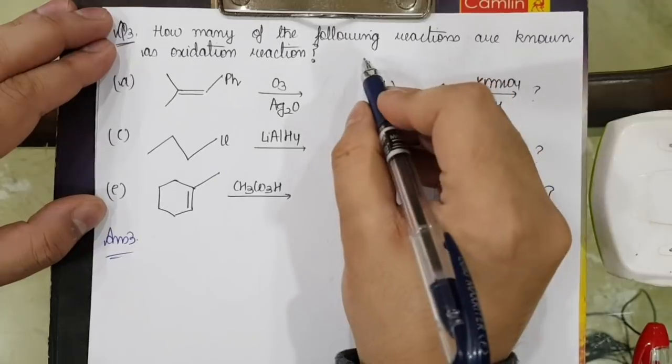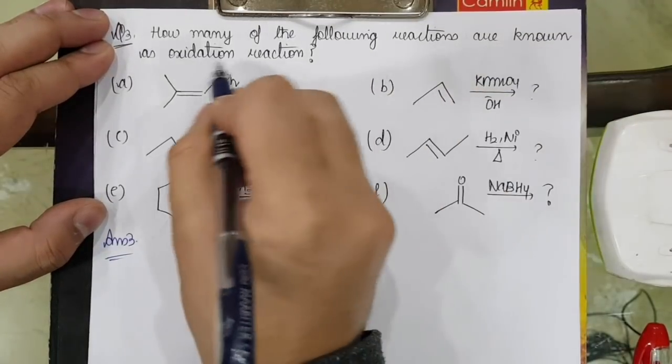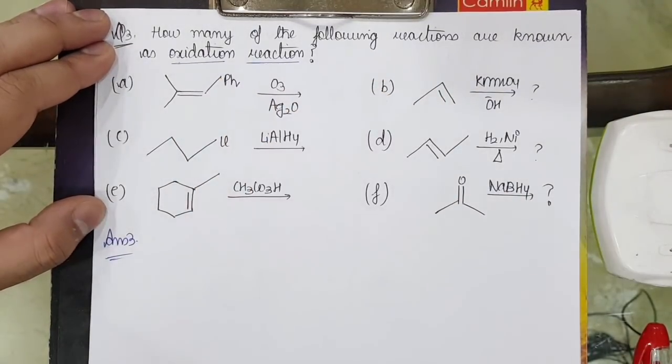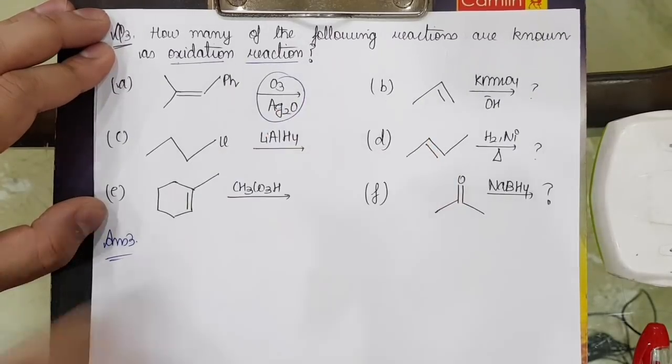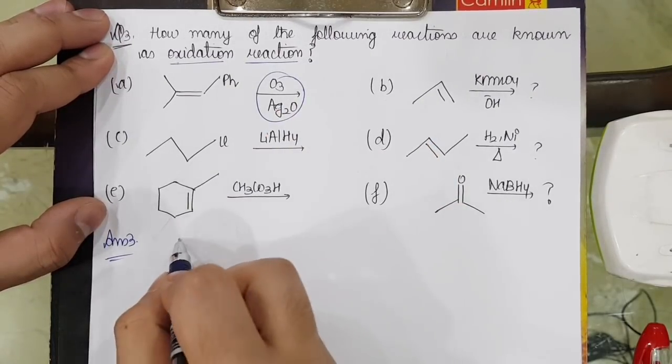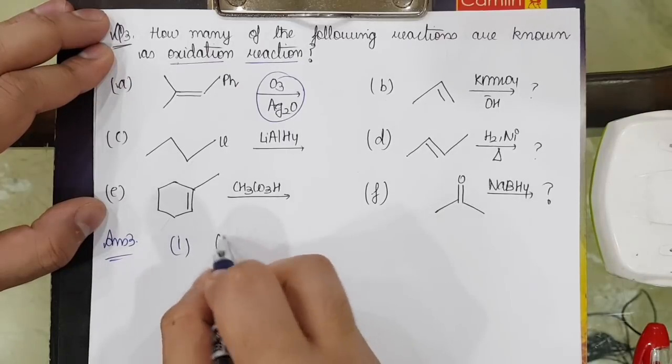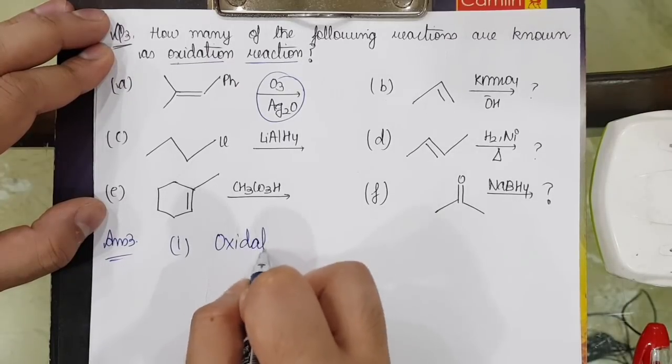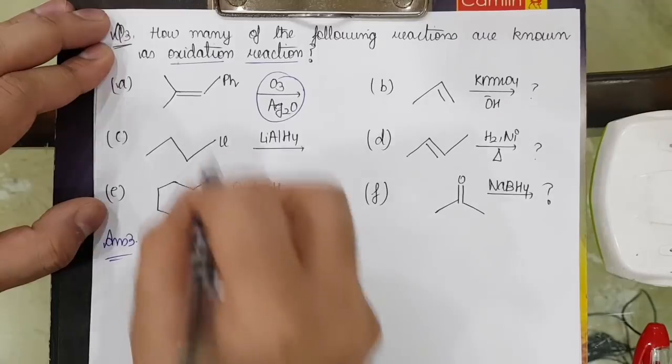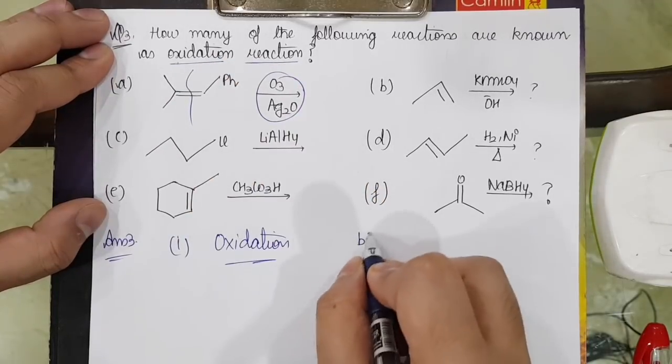The next question is: How many of the following reactions are known as oxidation reactions? Basically, in which reactions is oxidation occurring? Ozonolysis is present with ozone with Ag2O, so obviously this will be an oxidation reaction. Double bond breaks.